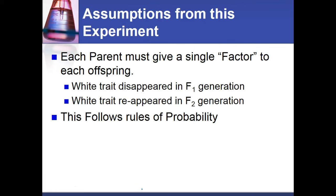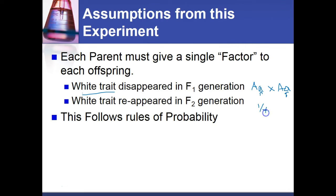Mendel called them factors; we call them alleles today — things like purple flower color or white flower color, constricted or round pod shape. The white trait disappeared in the F1 because it was masked by the dominant big A allele. But the white trait reappeared in the F2, because when you cross two heterozygous individuals that both carry a little a, one-fourth of the time those little a's are going to meet and produce a white individual. This follows the rules of probability.